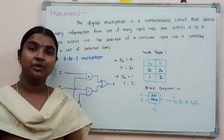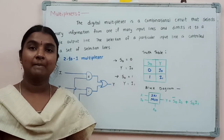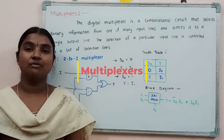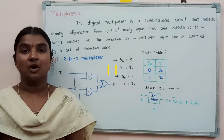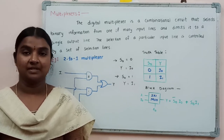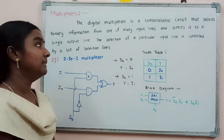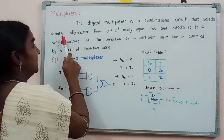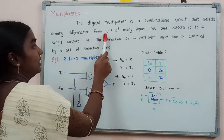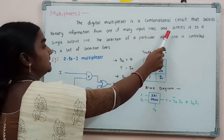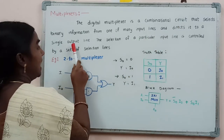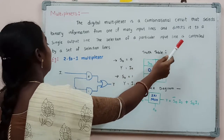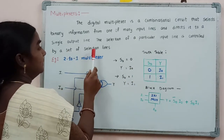In this video, I am going to explain multiplexers. Multiplexing means transmitting a large number of information over a smaller number of channels or lines. A multiplexer is a combinational circuit that selects binary information from one of many input lines and directs it into a single output line. The selection of the particular input line is controlled by a set of selection lines.